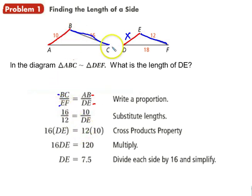The length of BC is 16, the length of EF is 12, the length of AB is 10, and the length of DE is what we're looking for—we'll call that X. Cross multiply: 16X equals 120, so X equals 7.5.